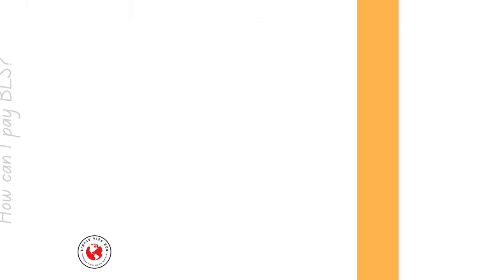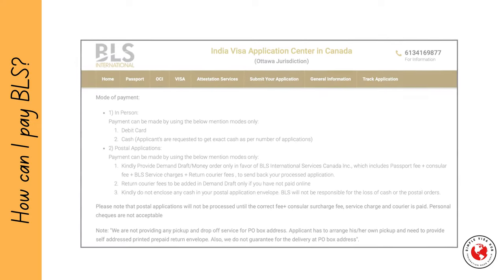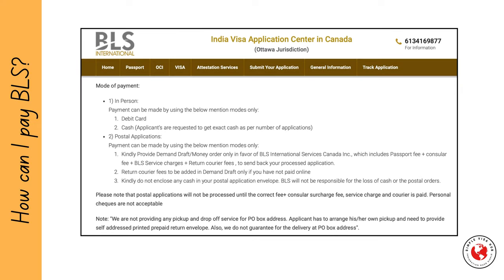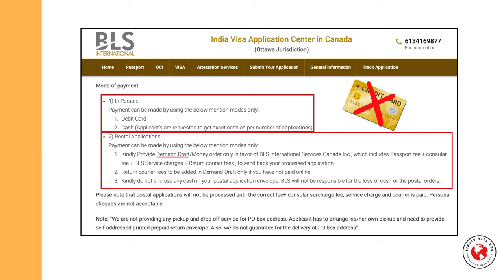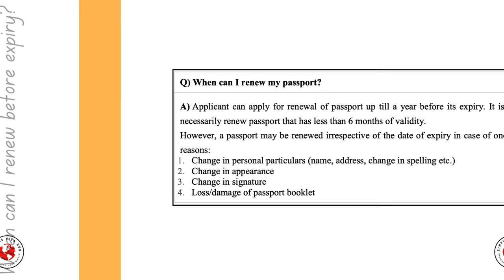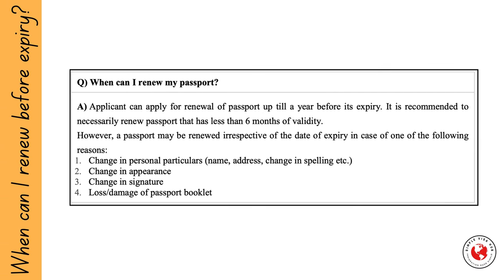The next common question is how you can pay BLS and what payment methods are accepted. The answer depends on your application method. If you are applying in person (walk-in), payment is via debit card or cash — no credit cards are accepted. If you are applying via courier, the accepted payment method is a demand draft drafted in favor of BLS International Services Canada Inc., which must include the passport fee, consular fee, BLS service charge, and return courier fees if not paid online.